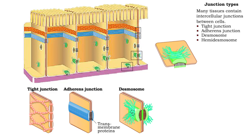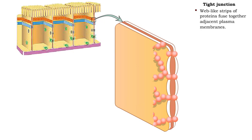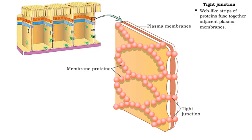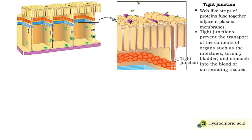The tight junction is an area where the plasma membranes of adjacent cells are fused together. These junctions protect underlying tissues from harmful substances by restricting the movement of substances, like hydrochloric acid, in the spaces between cells.